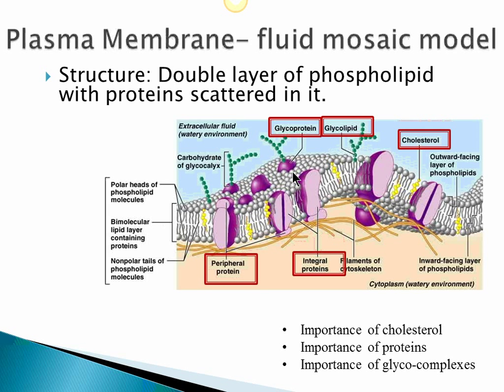The cell membrane is a double layer of phospholipids. A phospholipid is a lipid — or fat — with a phosphate molecule attached to it. Proteins and cholesterol are also scattered within it. The phospholipid molecule has a globular head with two tails. In the double layer, the tails face each other. The blue extracellular environment on the outside is watery, and the cytoplasm on the inside is also watery.